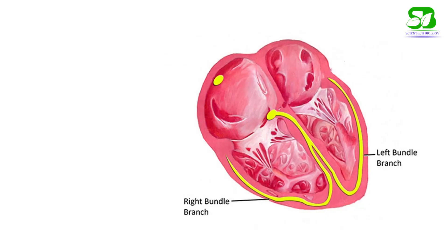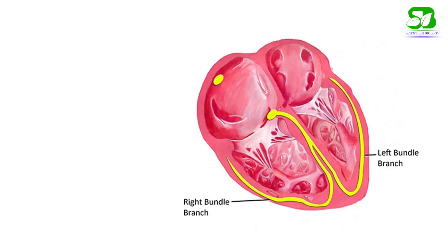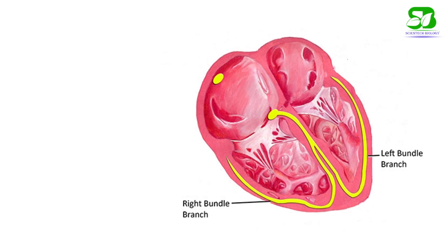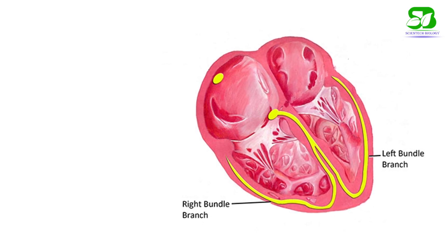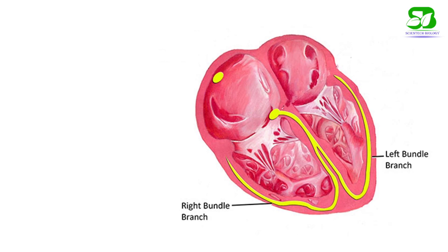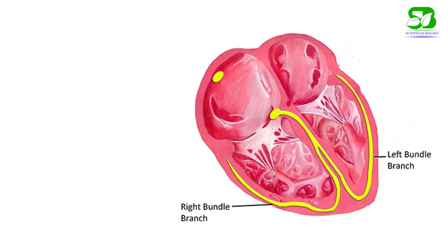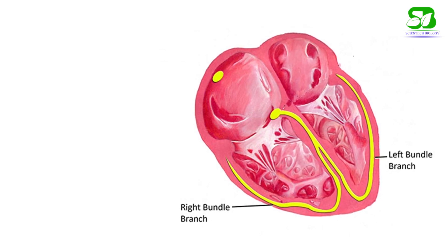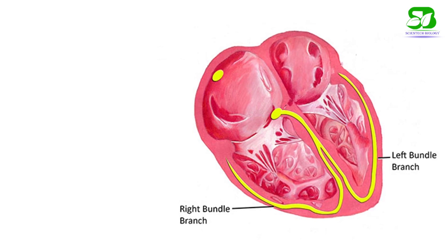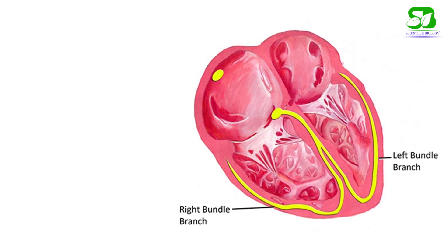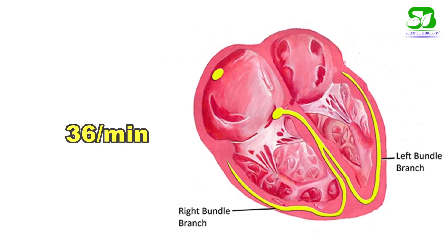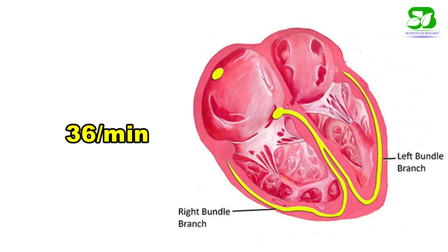The bundle of His originates from the AV node and proceeds along the right side of the interventricular septum, then divides into two branches. Its normal function is to conduct the atrial impulse into the ventricles when the SA and AV nodes fail. The bundle can originate cardiac impulses, but the rate is very slow — about 36 beats per minute.